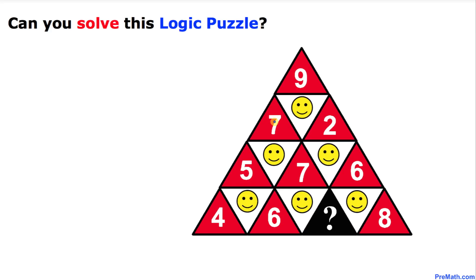Welcome to Pre-Math. In this video tutorial, we are going to solve this given happy pyramid. As you can see in this figure, the entries are 9, 7, 2, 5, 7, 6, 4, 6, 8. And now the question mark is, what number is going to be at this place? Can you figure out the answer on your own?